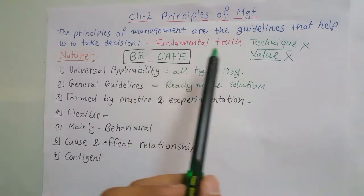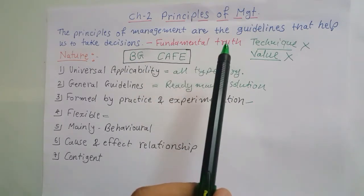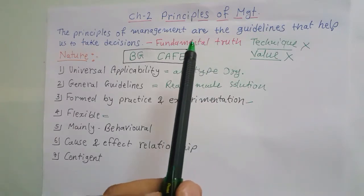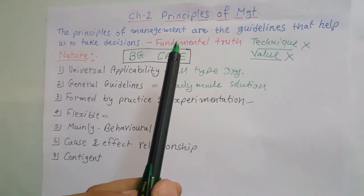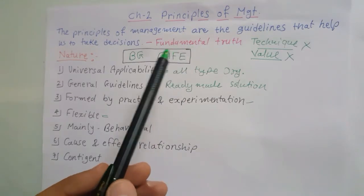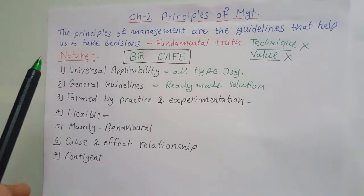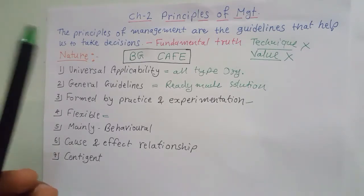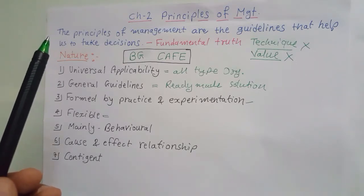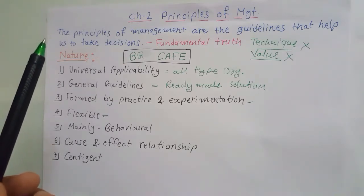It is also considered as a fundamental truth. Fundamental truth means it is trying to establish the cause and effect relationship in principles of management. So ultimately, the principles of management are statements of fundamental truths which can be used by managers as a guideline or as action under different situations.